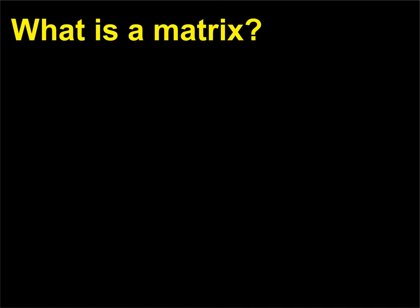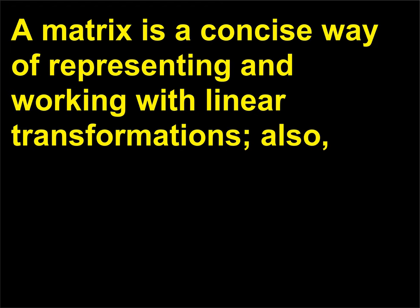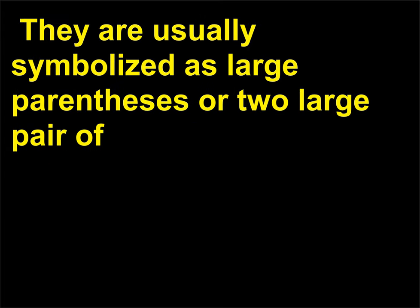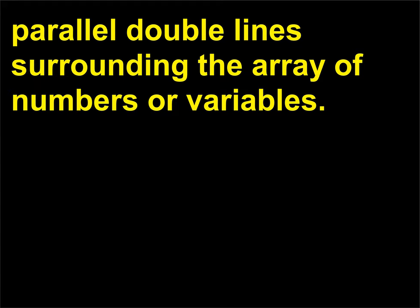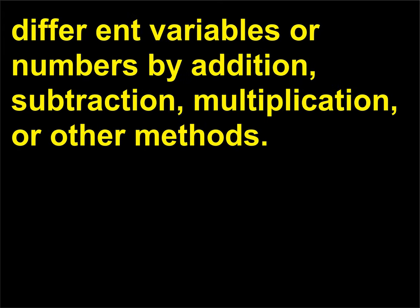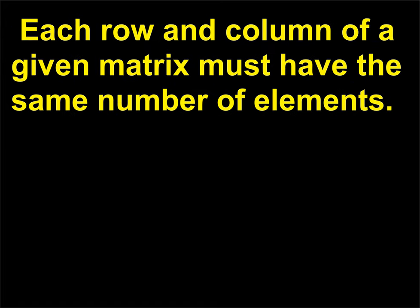What is a matrix? A matrix is a concise way of representing and working with linear transformations. It is a rectangular array or grid of numbers or variables that allows the user to perform certain mathematical operations. Matrices are usually symbolized as large parentheses or two large parallel double lines surrounding the array of numbers or variables. These numbers can be manipulated to solve systems of equations or problems with many different variables by addition, subtraction, multiplication, or other methods. Each row and column of a given matrix must have the same number of elements.